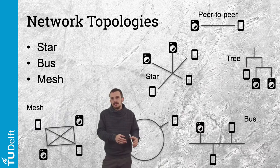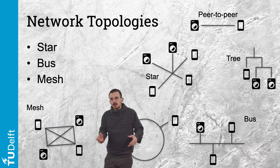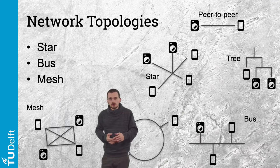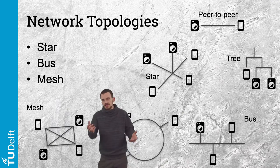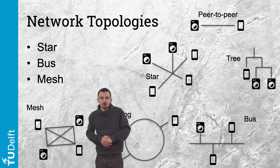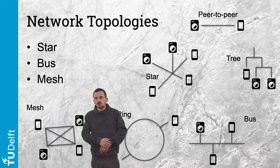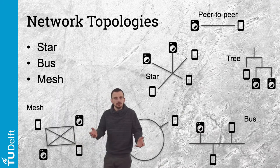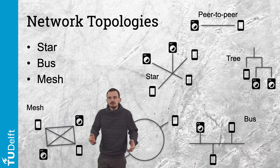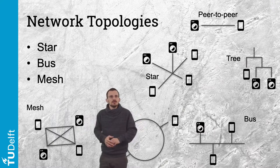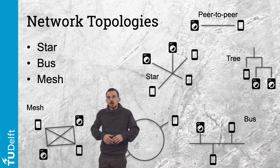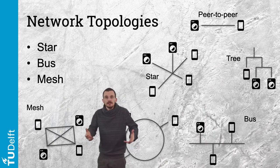With mesh topology, devices — called nodes — are connected to several other devices on the network. They can receive and transmit messages from and to these devices; only the targeted device reads the message, otherwise it is forwarded to the next device. In the IoT context, mesh is often used to connect low-power devices across wide areas such as agricultural fields. Sensors can send a message to their neighbor sensors, which transmit the information further until it reaches the destination. If all devices are connected to all devices, it is called a fully connected network.